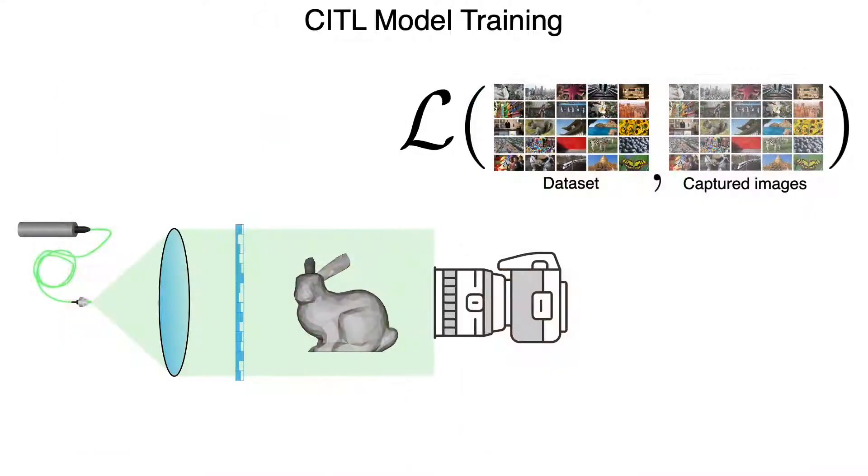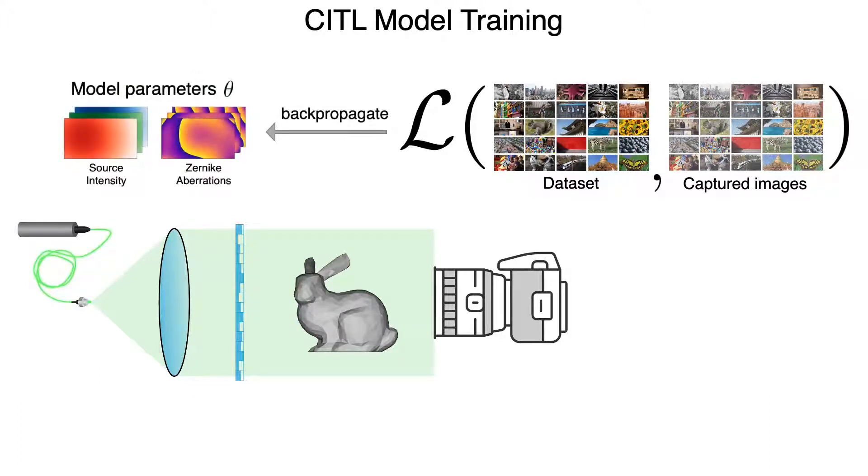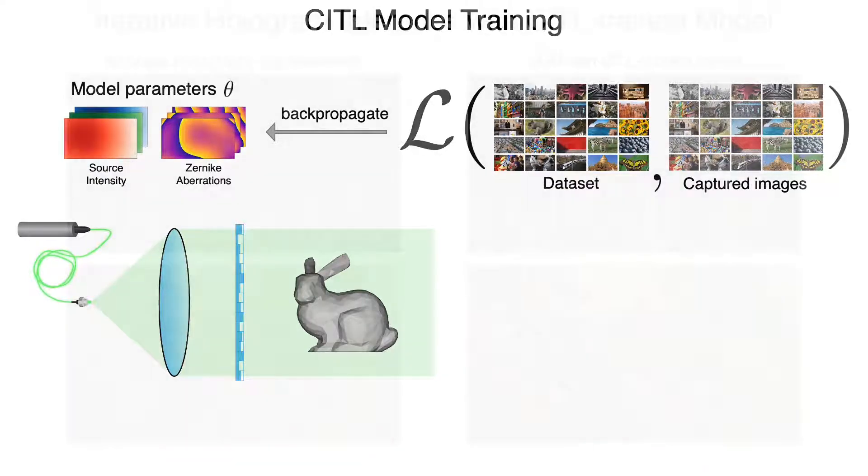We explore variants of this procedure that train an interpretable light transport model of a specific hardware setup using a dataset of images. This model calibrates source intensity variation on the SLM, non-ideal propagation, and other optical operations and parameters in a fully automatic way. Once calibrated, a camera is not necessary to synthesize new holograms.